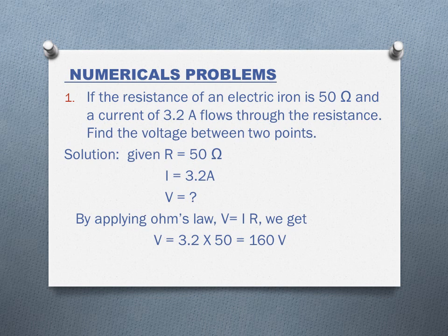Now we come to the numerical problems. Question 1: If the resistance of an electric iron is 50 Ω and a current of 3.2 A flows through the resistance, find the voltage between two points. We are asked to calculate the value of voltage with the value of current and resistance given to us. Therefore we use the formula of Ohm's law, that is V equals IR. Substituting the values of R and I as given in the question, we get V equals 3.2 times 50, that is 160 volts, since the potential difference is measured in volts.